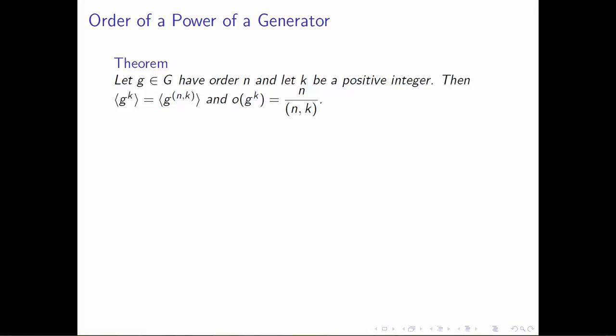The first part of the statement alone is helpful for picking out different generators of the group generated by g to the k. It helps us pick out a smaller power that would generate the same group, which is helpful computationally. What's really great about this theorem is that it goes on to say more than just that: it tells us the order of the group generated by g to the k.